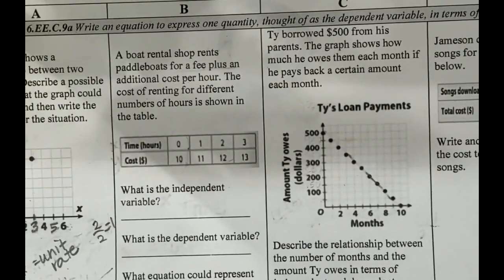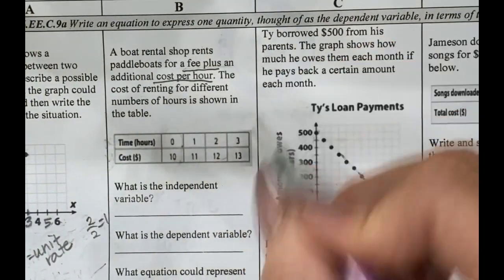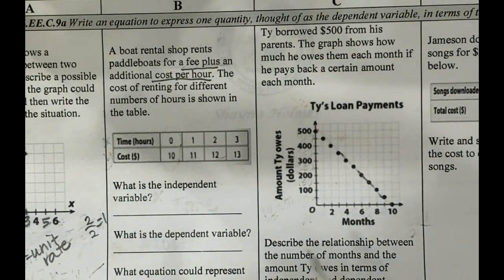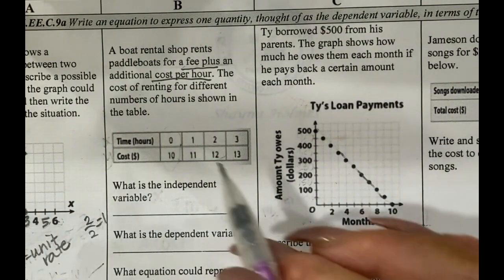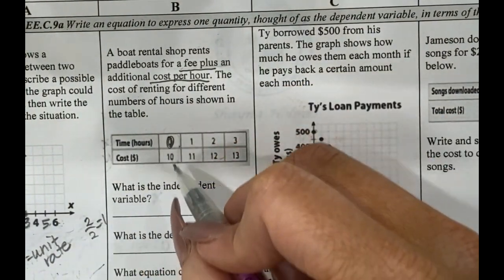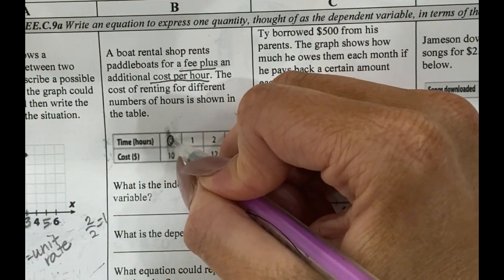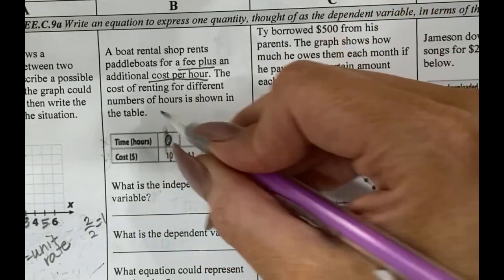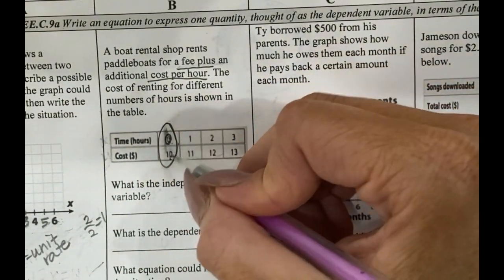Okay. So let's look at the next problem. I'm sorry that there's also like a shadow casted on. It's getting dark. A boat rental shop rents paddle boats for a fee plus an additional cost per hour. This is important. A fee plus a cost per hour. There's two things that we need to look for. Okay. The cost of renting for different number of hours is shown in the table. Okay. So something that stands out to me in this table is that it tells me that at zero, most tables that you've probably seen at zero, the Y would also equal zero, but here it's zero equals 10. And that is really important because that tells us at zero hours, that's our fee.